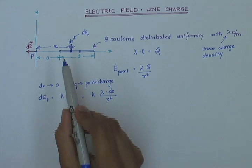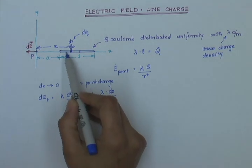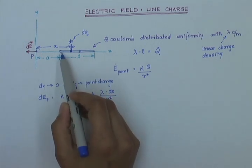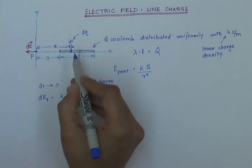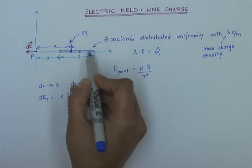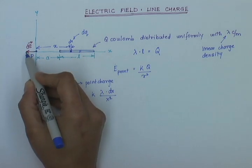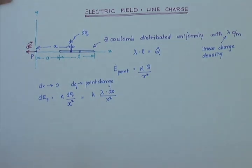So, as I go along the rod and keep breaking it down into many small elements, each of them is going to cause an electric field at P. And the direction of electric field due to each of this element is along the negative y axis.